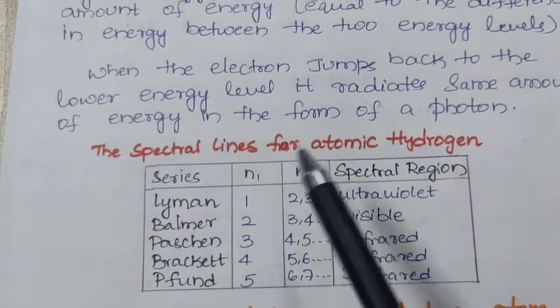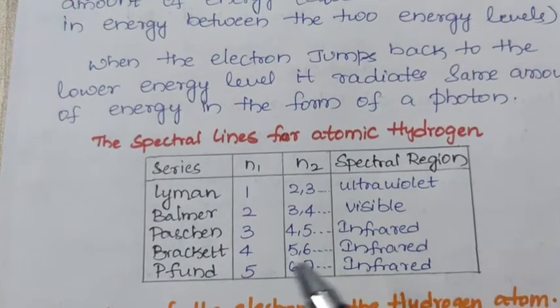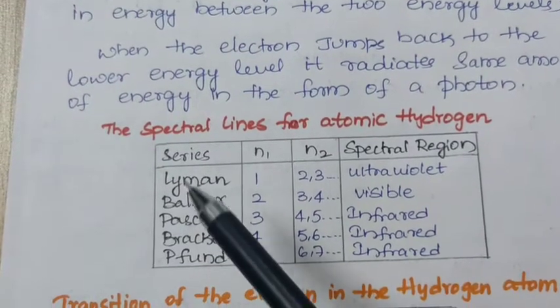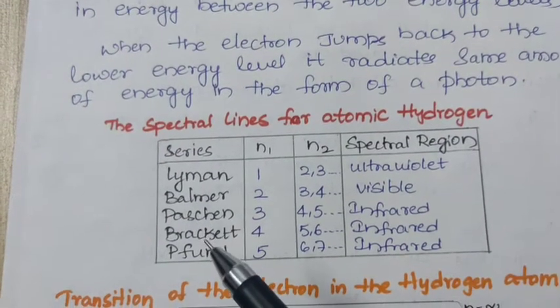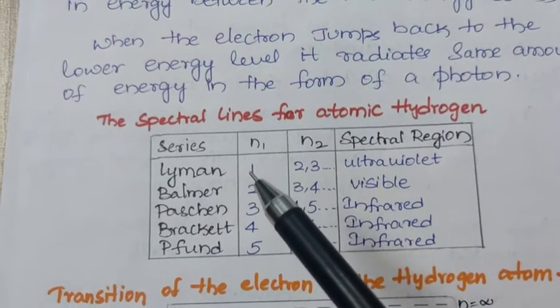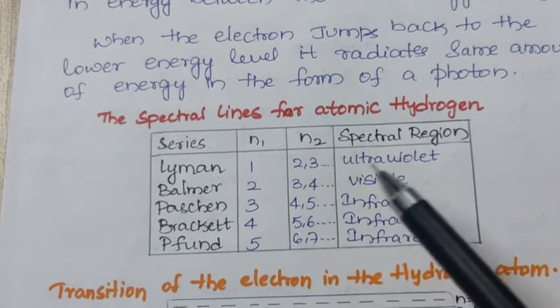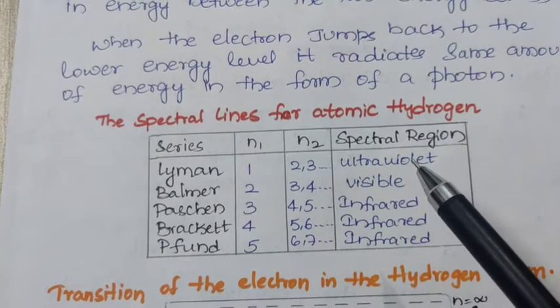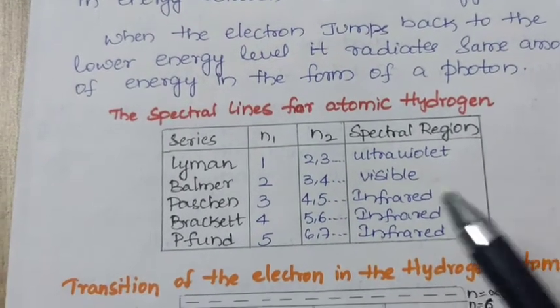Now, we will see the spectral lines for atomic hydrogen. Here are 5 series: Lyman series, Balmer series, Paschen series, Bracket series and Pfund series with values N1 as 1, N2 as 2, 3 and it appears in the UV region, that is ultraviolet region.